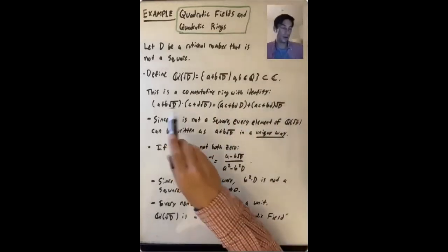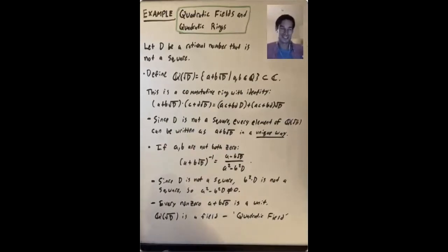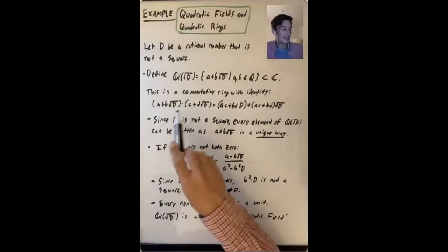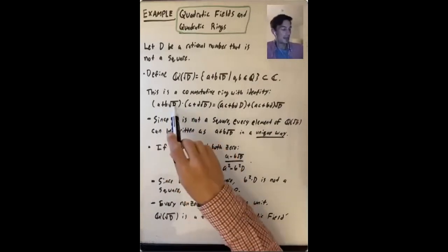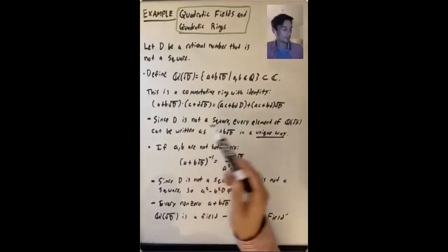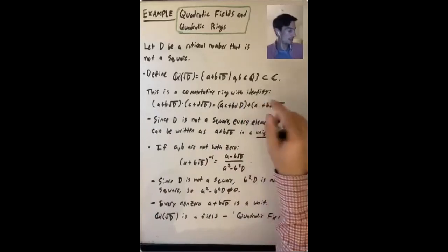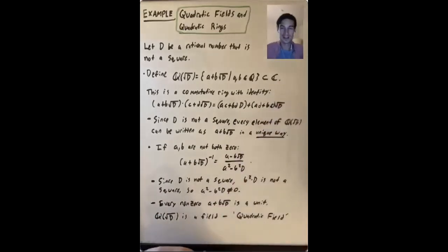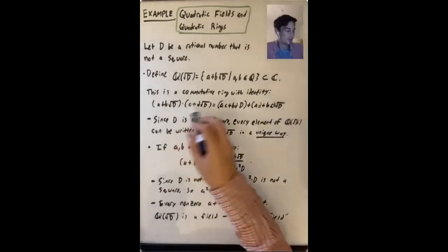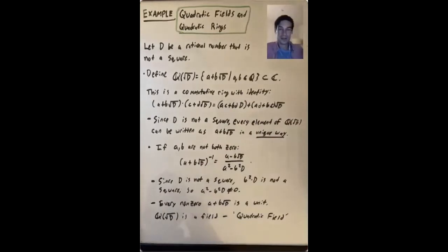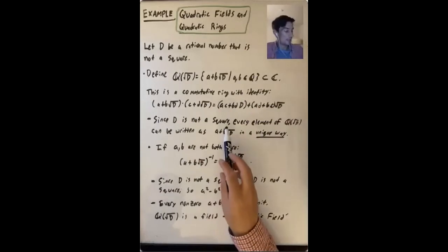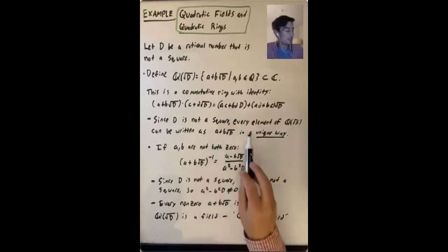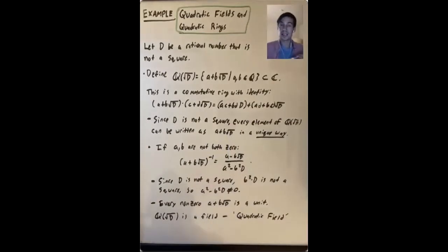How does multiplication work? It works just like regular multiplication of square roots. So (A + B√D)(C + d√D) = AC + BdD + (Ad + BC)√D. Since D is not a square, you can show that every element of Q adjoin √D can be written as A + B√D in a unique way — that's a nice exercise you should write a full proof of.